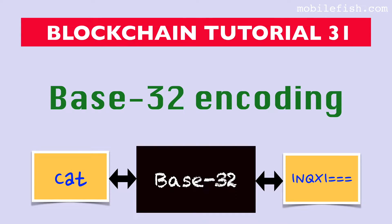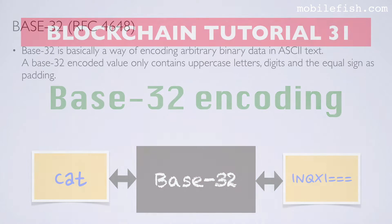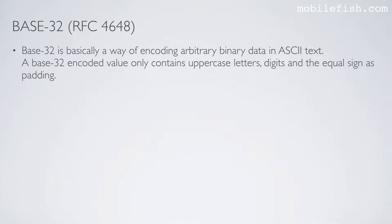In this tutorial I will explain how the base32 encoding works. Base32 is basically a way of encoding arbitrary binary data in ASCII text. A base32 encoded value only contains uppercase letters, digits and the equal sign as padding. Such a value, excluding padding, can be included in a URL without encoding any characters.